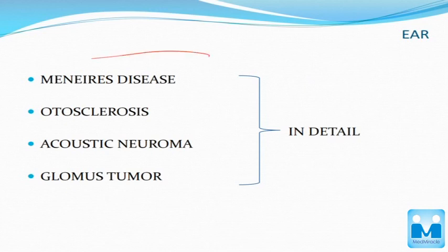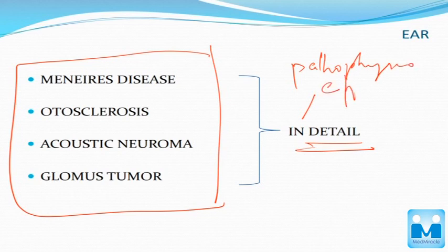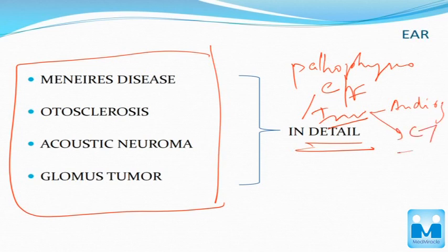These are the diseases you have to study in detail — meaning you have to know the pathophysiology, clinical features, and investigation. Investigation is not just names; you have to know in detail what you will see on audiogram, what you will see on CT, and depending on the disease the investigation will change. You have to know the investigations and their findings, and if there is an associated image, study that image too.